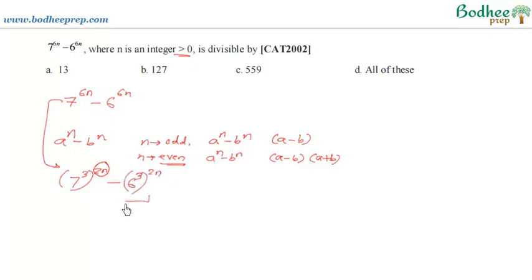Now this particular expression we have brought in the form of a to the power n minus b to the power n, where n is even or the power is even. So this expression will be divisible by 7 cube minus 6 cube as well as 7 cube plus 6 cube.